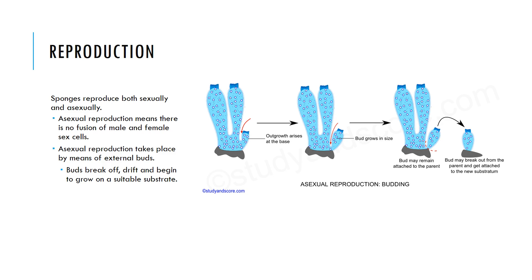Fun fact: sponges are actually highly regenerative. You could take a sponge, put it in a blender, then take those cells and put them in a petri dish, and you can actually see new sponges being created just from those tiny little aggregations of cells. They're really sturdy organisms. Importantly, this tiny sponge that starts off is a genetic clone to the parent sponge, so there is no genetic diversity between those two sponges.